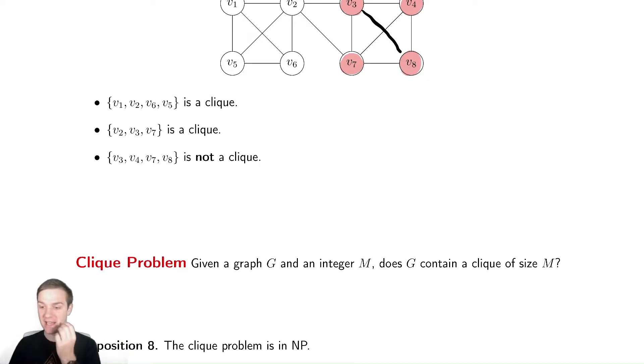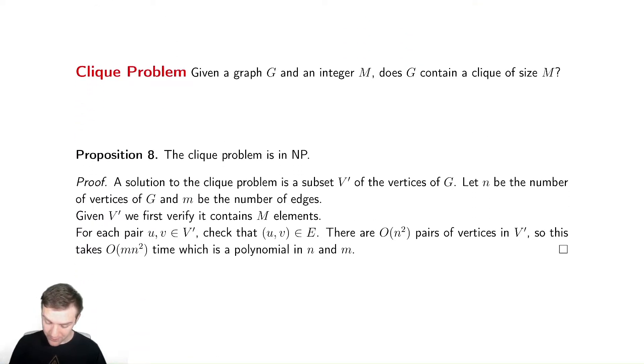Our proof that this is NP will again be very easy. Given a solution for an NP complete proof, you're going to say, if you give me a solution, can I check its correctness? So a solution to the clique problem is a subset V' of the vertices. We need to define the sizes so we can talk about them. Given the set, we need to first verify that it has the correct number of elements.